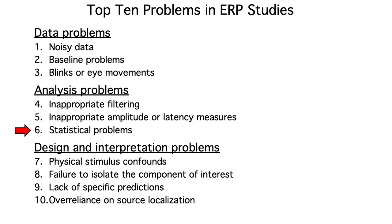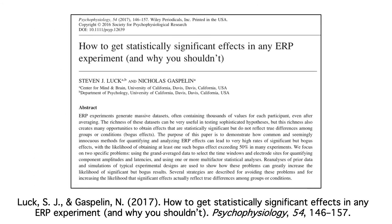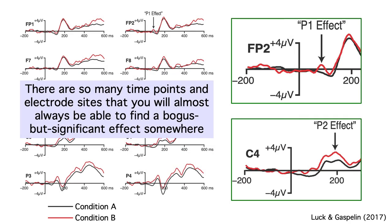Now let's turn to statistical problems. There are lots of potential statistical issues in any study, whether or not it's an ERP study. But the main problem I see in ERP studies is an inflation of the false positive rate — it's just too easy to find bogus but significant effects if you're not careful. As we discussed in a previous video, this problem arises when researchers look at the data and use the observed effects to decide on what time windows and electrode sites to use in their analyses. When they do that, they can almost always find a significant effect that's just a result of noise.